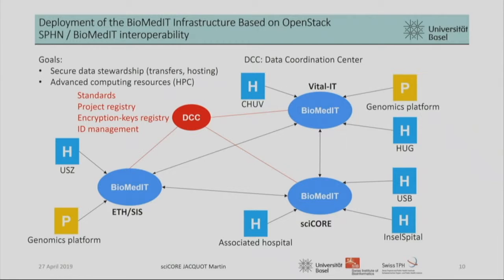We see that we have different hospitals, and each hospital is attached by default to one node. The University of Zurich will transfer its data to ETH; CHUV will go to VitalIT and so on. The whole setup is controlled by the Data Coordination Center, which provides the standards and registers all the projects — only registered projects are allowed to use this infrastructure. They also provide the encryption keys for the data, because we are only allowed to transfer data that has been encrypted. They also provide identity management of the users — only registered users approved by SPHN will be registered, and all nodes can query through DCC to see who is allowed to log in.